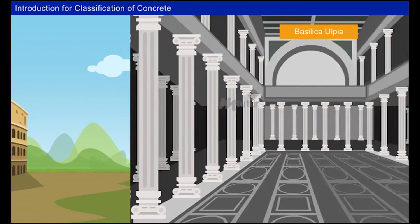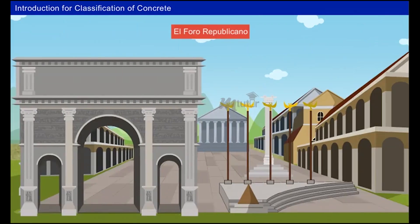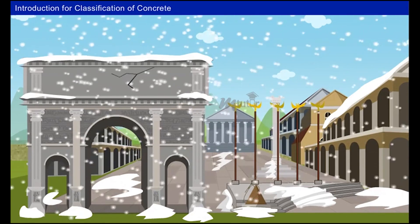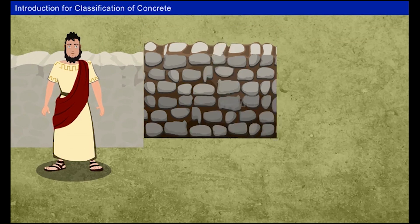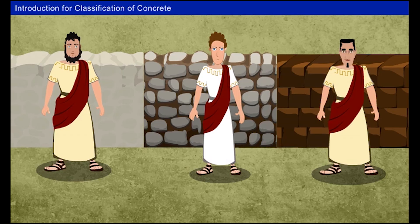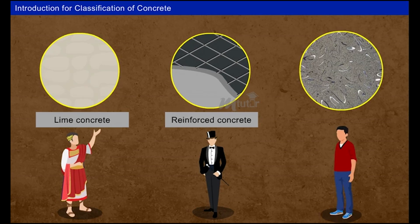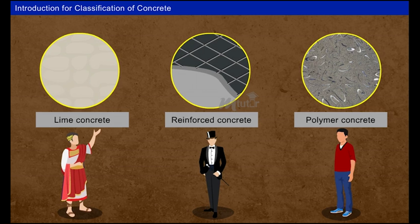Romans built many structures from temples to forts. The structures built in cold weather would freeze the concrete, reducing its durability and strength. To overcome this, they tried combinations of other materials that could withstand cold weather. With the ideas of inventions made by the Romans, people in other areas of the world also used various materials in the preparation of concrete, morphing it into new forms and resulting in various types of concrete.